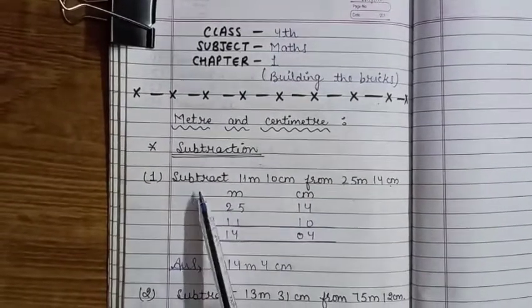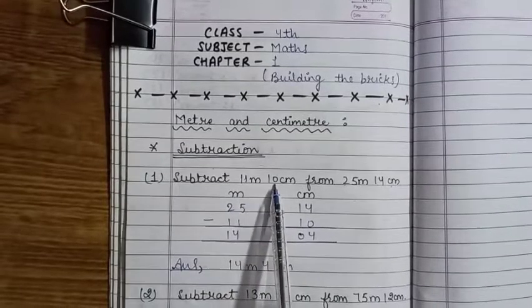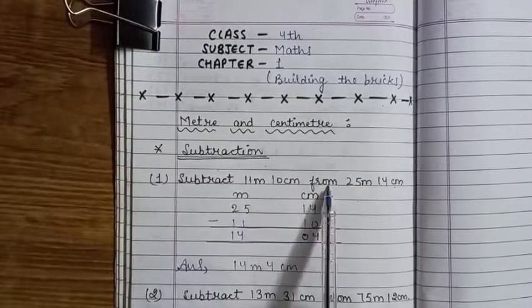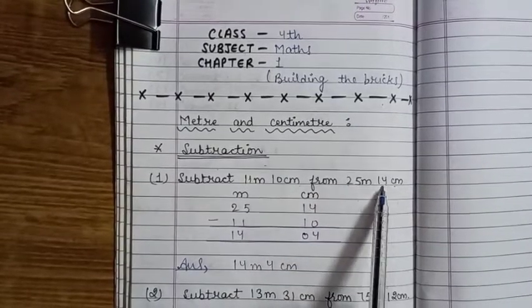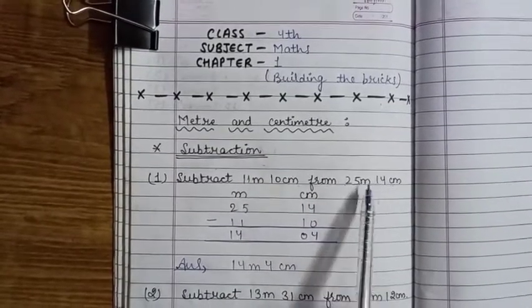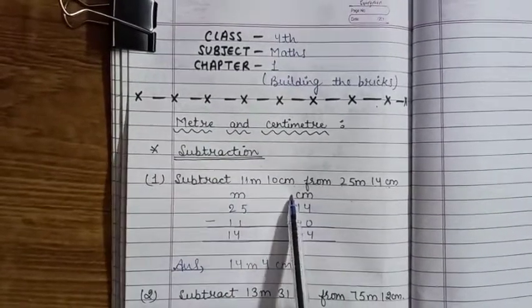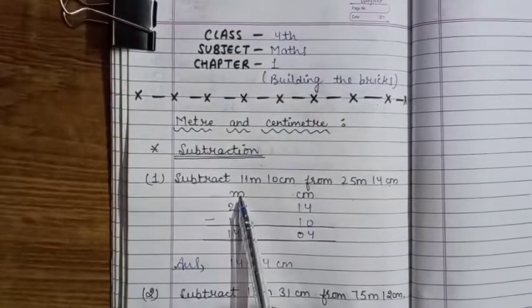Is question mein is ki language dekhiye - subtract 11 meters 10 centimeter, aapko subtract karna hai 11 meter 10 centimeter from 25 meter 14 centimeter. 25 meter 14 centimeter mein se aapko 11 meter 10 centimeter ko subtract karna hai. Same jaise hamne pehle seekha hai, hum ismein meter aur centimeter ke columns banayenge.